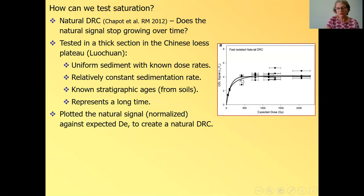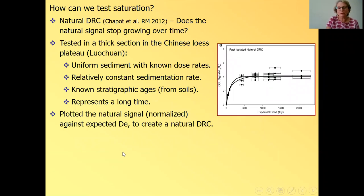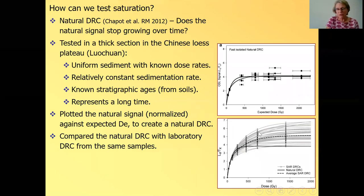And they know the expected dose because they know the age and they know the dose rate. And you can see that the natural signal in the sample, as you go down the section, this is age, but also this is down the section, older samples. At first, the natural signal grows, and then at about less than 500 gray, it stops growing. So also in nature, the signal stops growing, the OSL signal stops growing. And then they took all these samples and gave them laboratory doses. So they took this sample, gave it additional doses in the lab and looked how the sample behaves. And you see, this is the natural dose response curve. And these are the laboratory dose response curves.